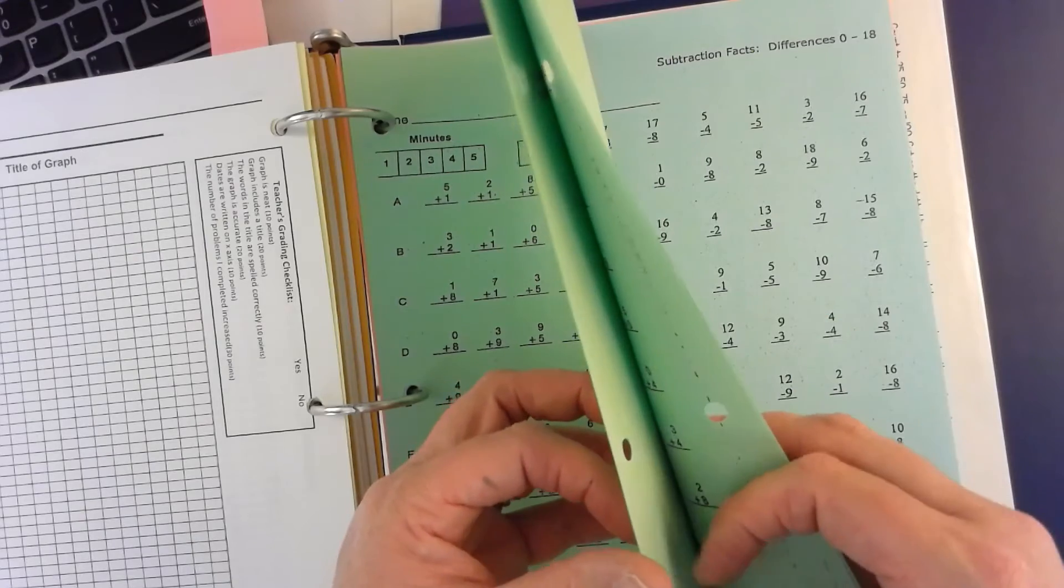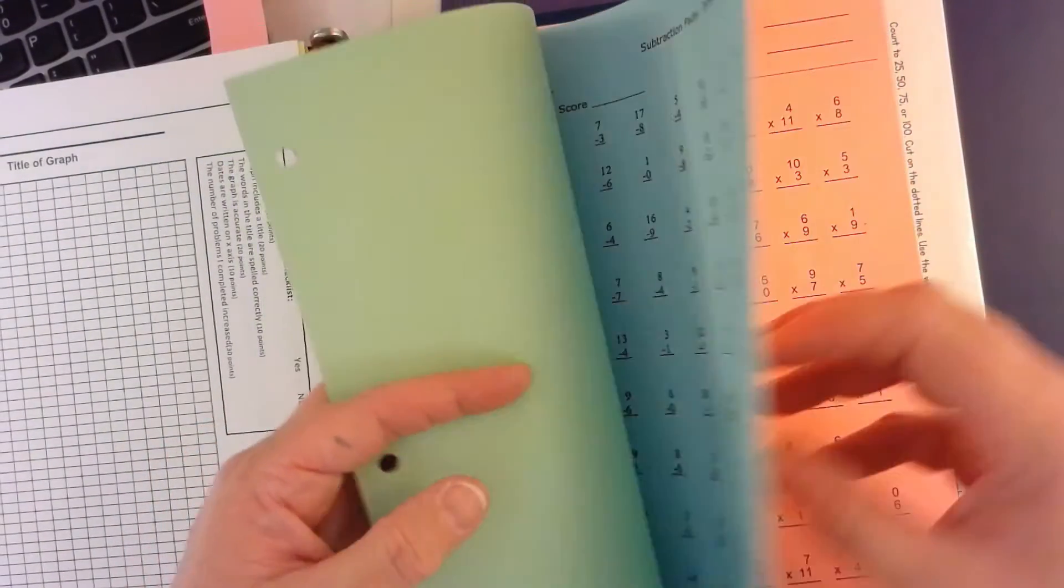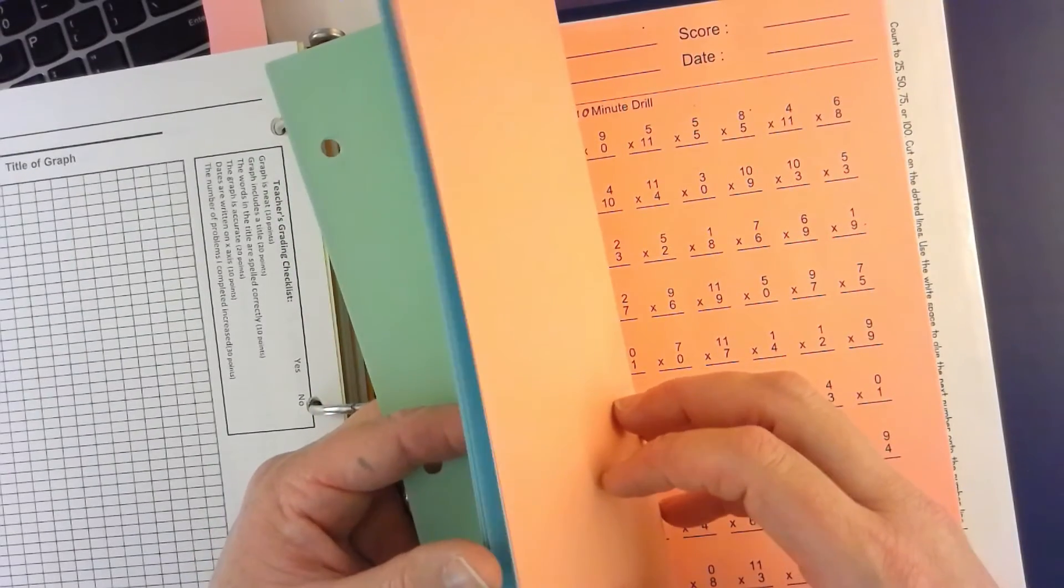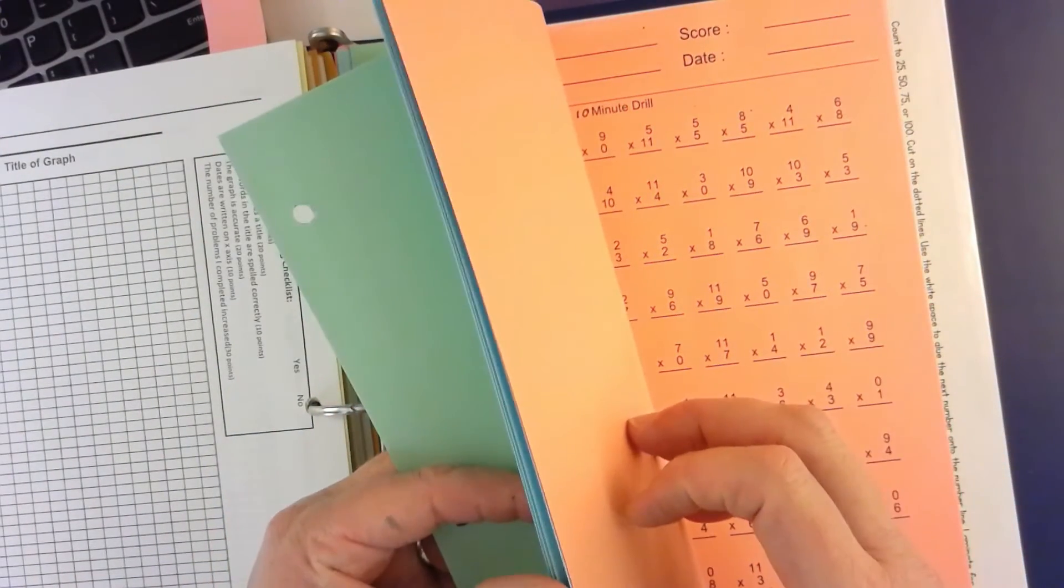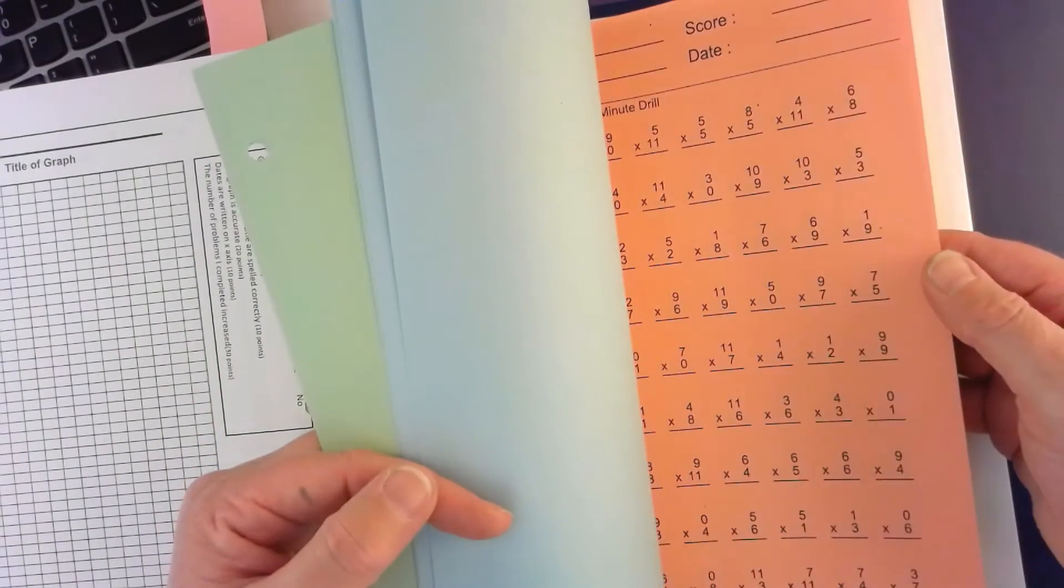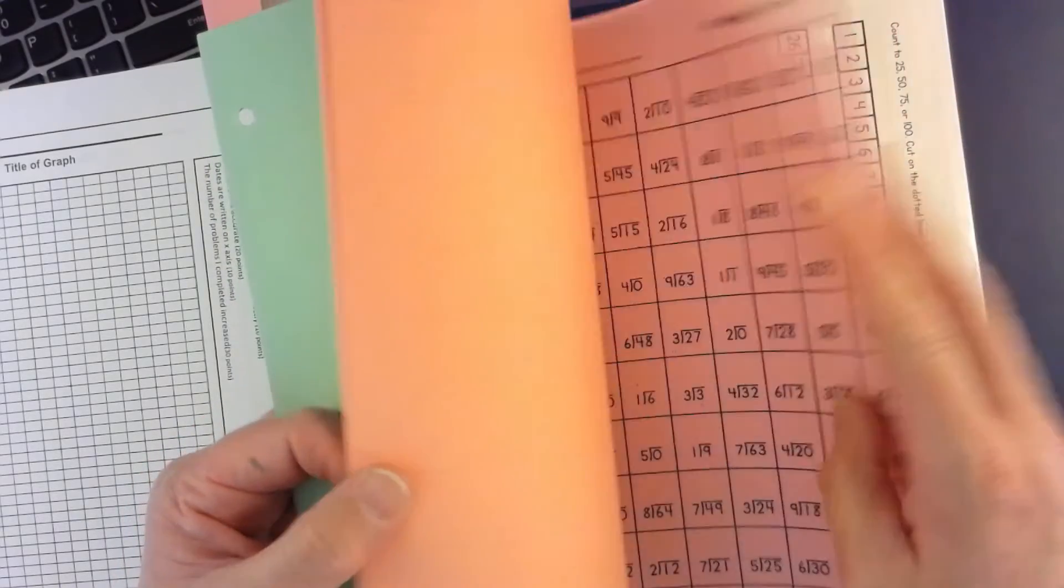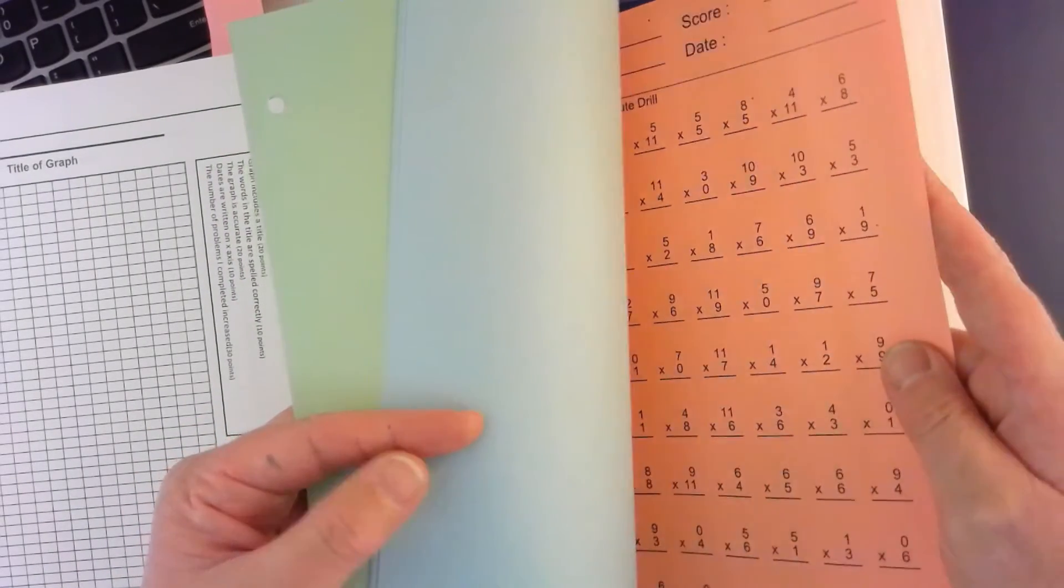Then there is subtraction and there's four pages of subtraction. There's multiplication right here, multiplication, and then there is pink which is division. So this is kind of orange, salmon color, pink is division.